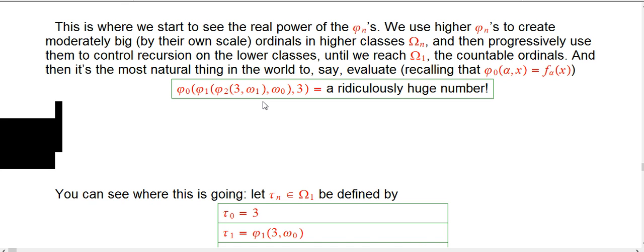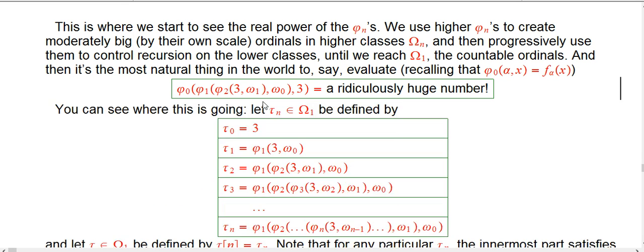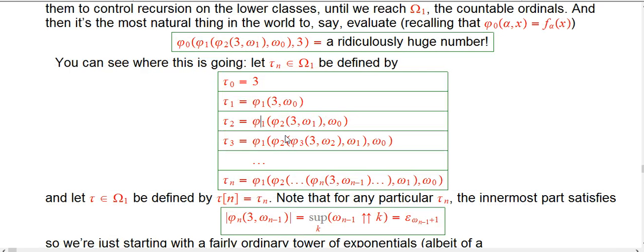But why stop there? Let τ_n - these are all going to be countable ordinals created using higher ordinal classes. τ_0 is just going to be good old-fashioned 3. It's not super important that we start with 3, but it's a nice place to be - it's not ridiculously complicated but gives us a nice starting point with towers of exponentiations. So τ_0 is just the number 3.